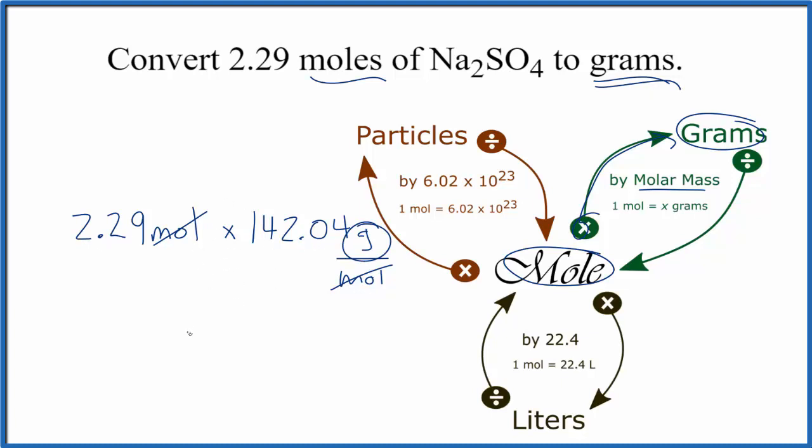When we multiply, we get 325.27 grams of Na2SO4.